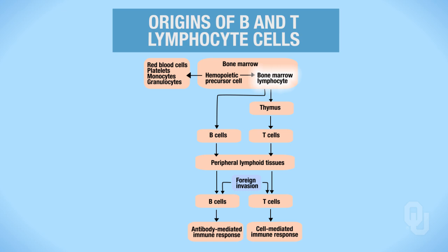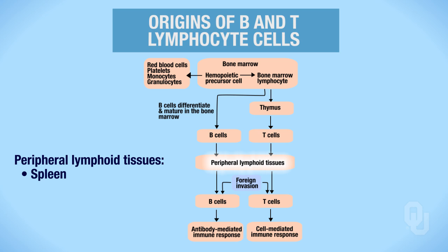Once we have these lymphocytes, they can start differentiating into B and T lymphocytes. The B lymphocytes are straightforward in the sense that they differentiate and mature in the bone marrow. Once they mature into B cells, they move into the peripheral lymphoid tissues—the spleen, Peyer's patches, lymph nodes, and tonsils, just to give a few examples of peripheral lymphoid tissues.